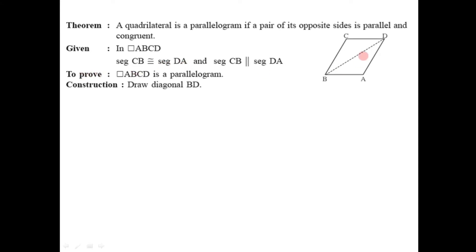This is given, and from this we have to prove that quadrilateral ABCD is a parallelogram. To prove this we need one construction: we have to draw a diagonal BD. By having this construction we'll start with the proof.